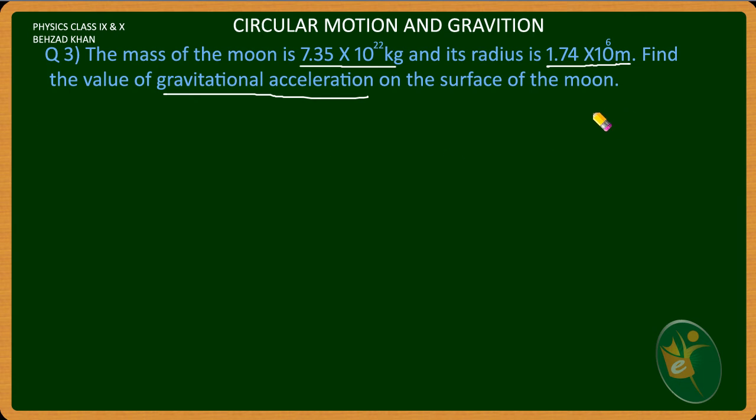We know that we have derived this equation when we were calculating the mass of the Earth in our previous videos. g equals GM upon r squared, where G is the gravitational constant. Its value is 6.67 × 10⁻¹¹. Then we calculate the gravitational acceleration.